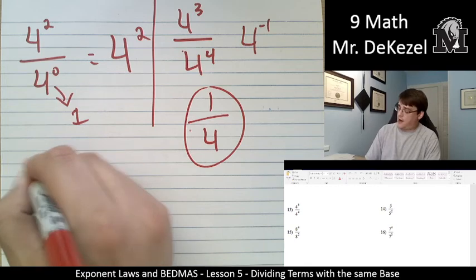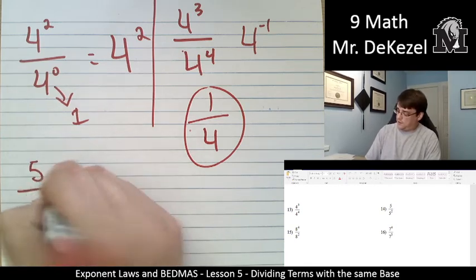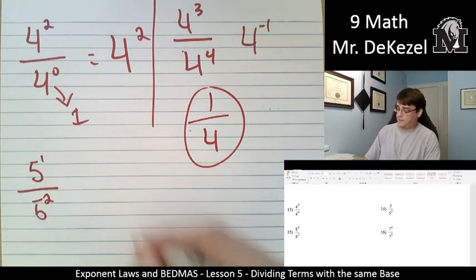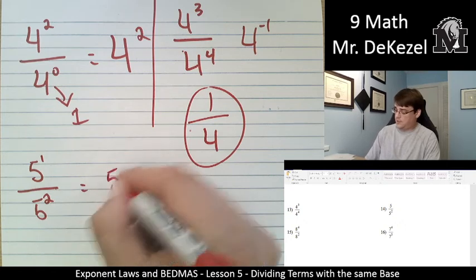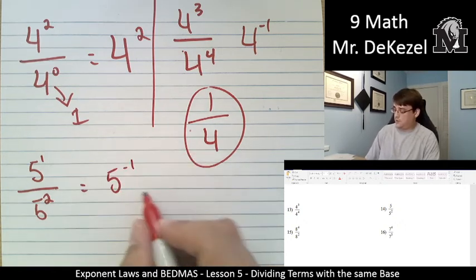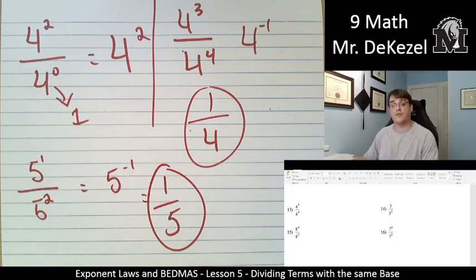Next question, 5 divided by 5 to the power of 2. So that's 1 minus 2. That is 5 to the power of negative 1, which is the same as 1 fifth.